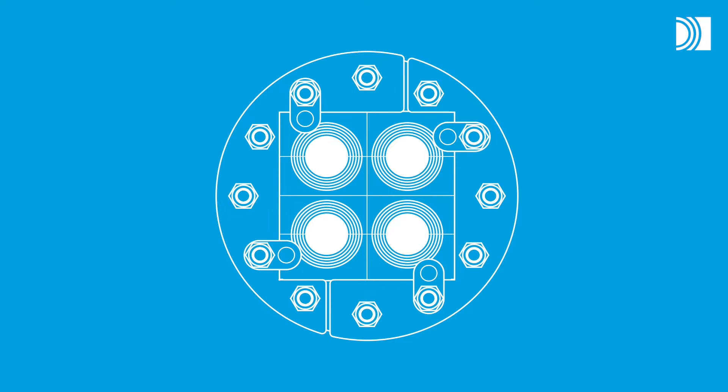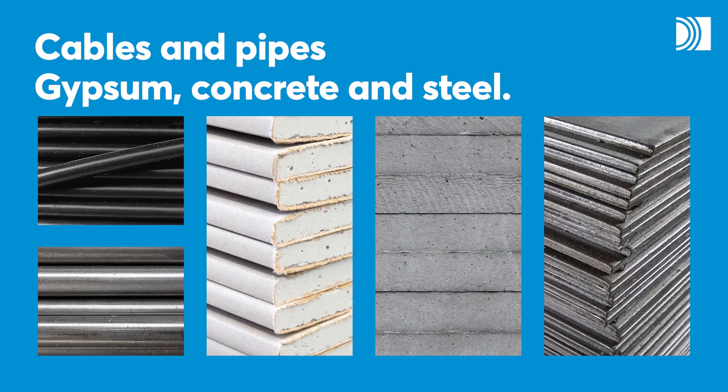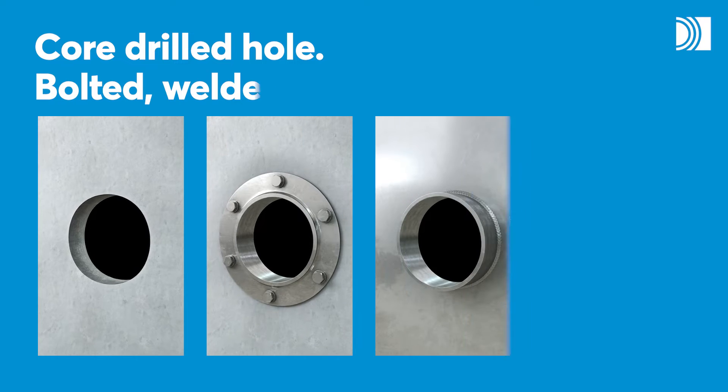With a Roxtec RUG Transit, you can seal openings for both cables and pipes in different structures, such as gypsum, concrete and steel. You can install it in a core-drilled hole or a bolted, welded or cast-in sleeve.